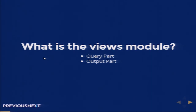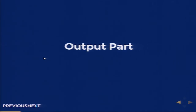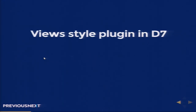The output part also consists of the fields and their styling. Concentrating on the output part, it has two parts: display, in which you can choose different kinds of displays — pages, blocks, attachments, and entity views — and then you can style them, like formatted fields, unformatted fields, collapsible fields, and stuff like that.